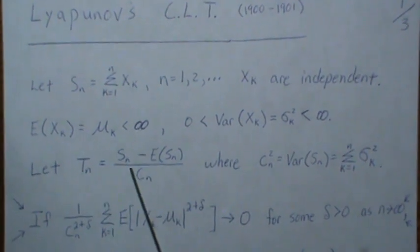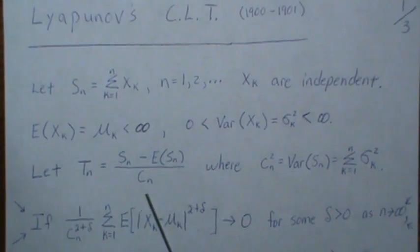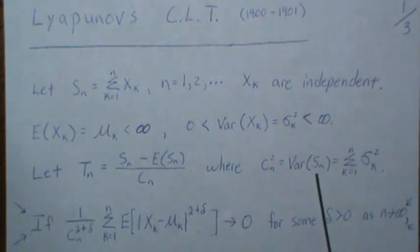We're going to let Tn be this quantity where Cn is the variance of Sn, which is the sum of these Xk's.